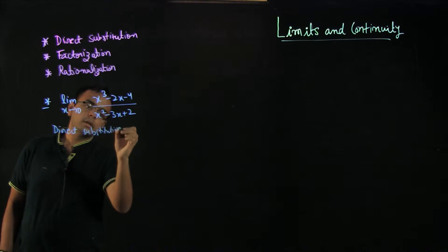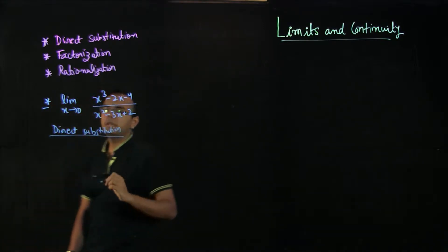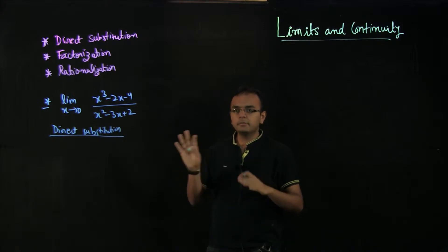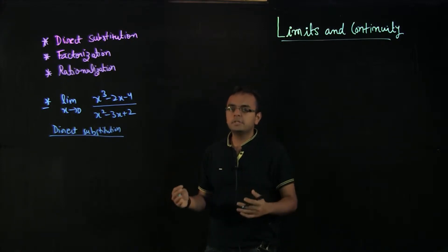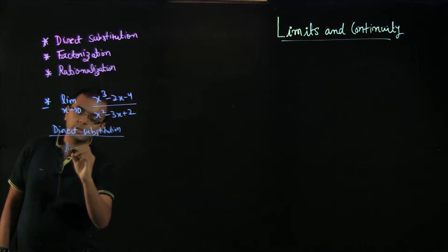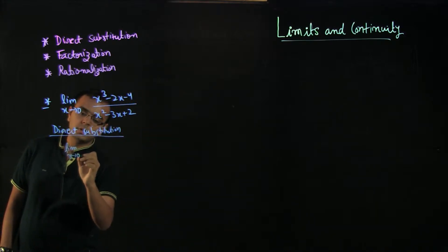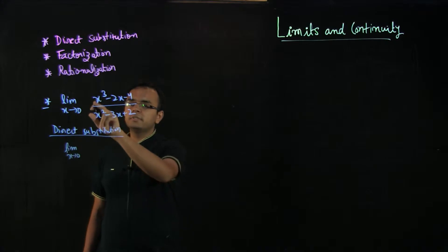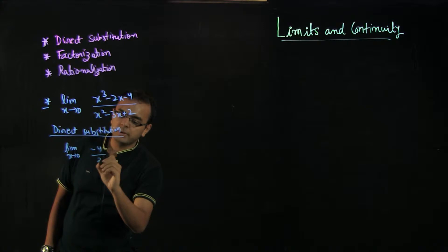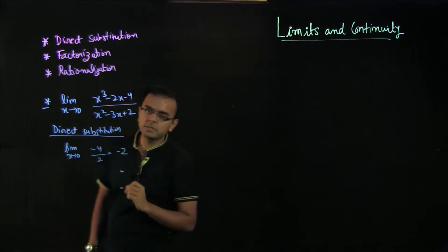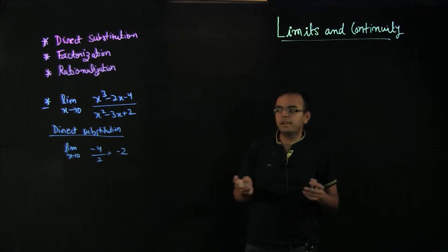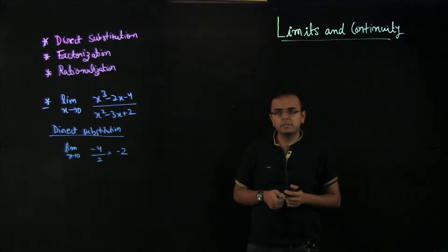We should always do this, at least mentally, as a check of what value is coming out. If you put x = 0, this gives 0 minus 0 minus 4, which is minus 4, divided by 0 minus 0 plus 2, which is 2. So the answer is minus 2. This is a finite value, so the limit is minus 2.